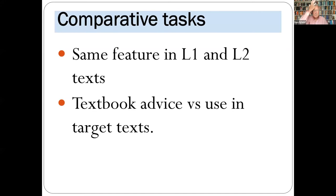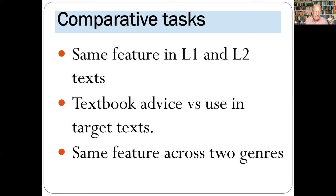Second, we can give students comparative tasks — excellent devices for raising students' awareness of language features by showing how things change with readers. Comparisons can be made by looking at a particular genre in English and the same genre in the student's L1, getting them to notice similarities and differences. They could compare advice in a language textbook on a feature — such as the use of 'I' — with what actual texts tell us. Or compare how a feature like hedging varies across two genres.